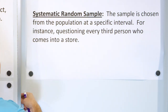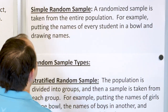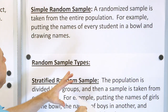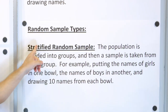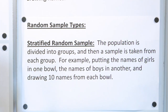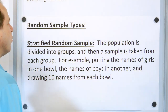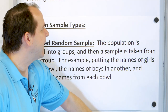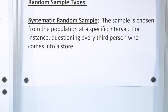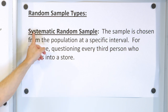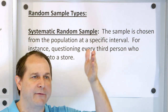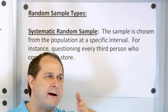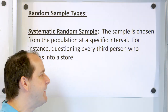From the top: simple random sample — put the entire population in a bucket and draw names. Stratified random sample — separate the population into one or more groups and draw from those groups. Systematic random sample — ask every third, fourth, or fifth person, every 10th car, every fourth candy bar — something like that.